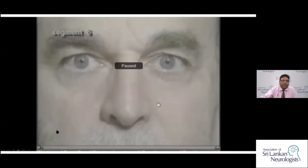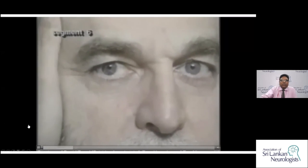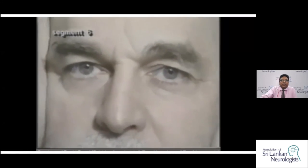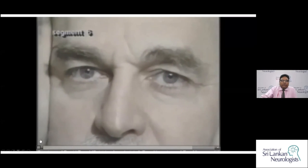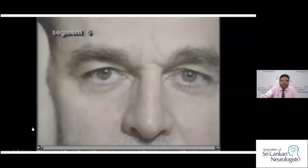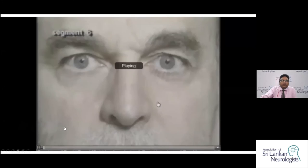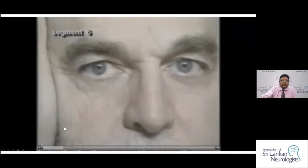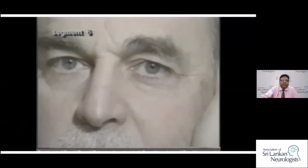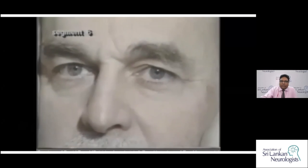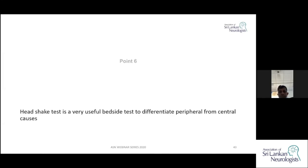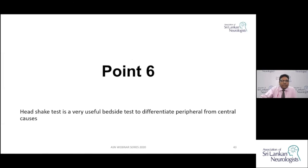A head impulse test video demonstrates: turning the head to the right, the patient maintains gaze fixation - VOR is intact. Turning to the left, the eyes move with the head, followed by a corrective saccade - VOR is absent on the left, indicating left-sided vestibular pathology. The head impulse test is a very useful bedside test: a positive test indicates peripheral pathology, helping differentiate peripheral from central causes of vertigo.